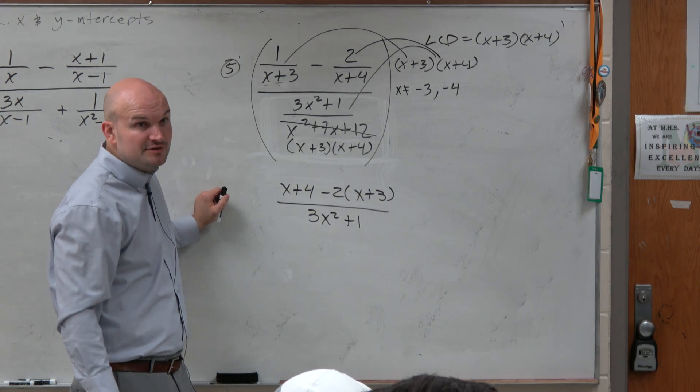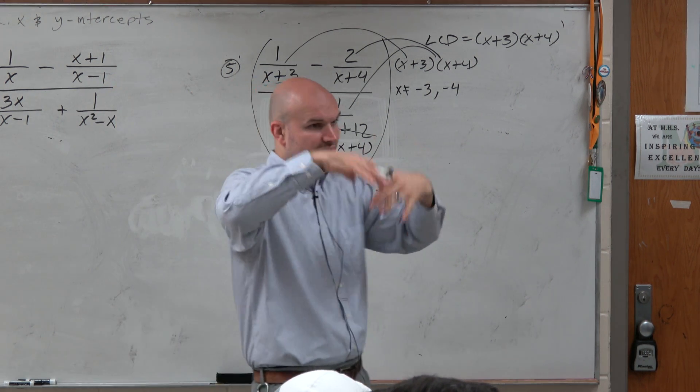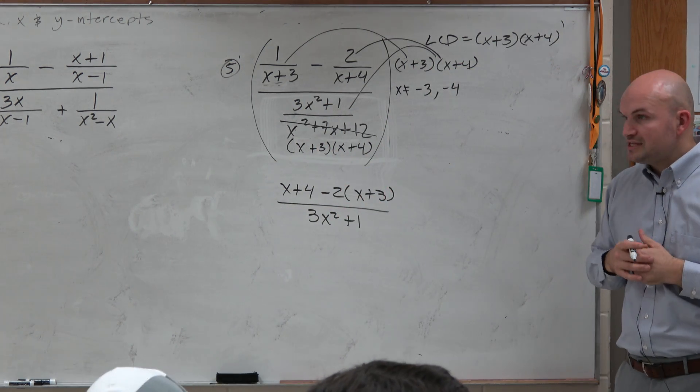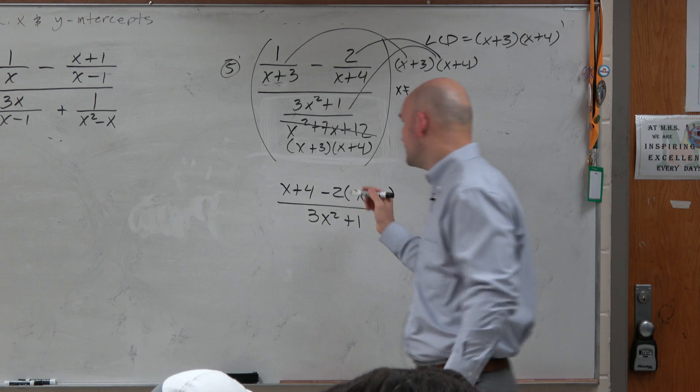And now all we've got to do is simplify it, and that's it. So if you multiply everything times the LCD, get rid of those extra denominators that you have, and now you just have something to simplify. So we can apply the distributive property.